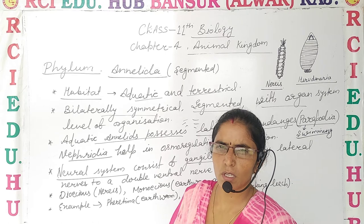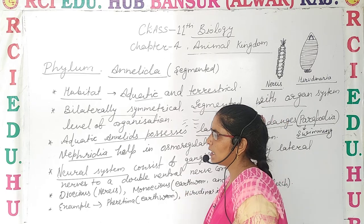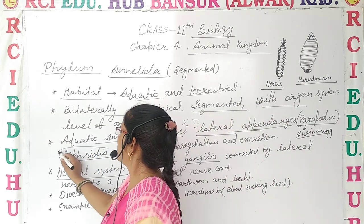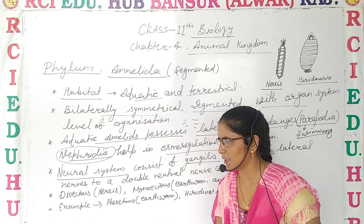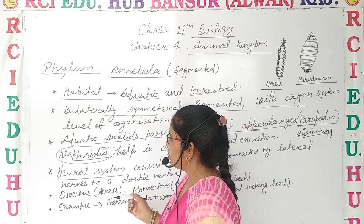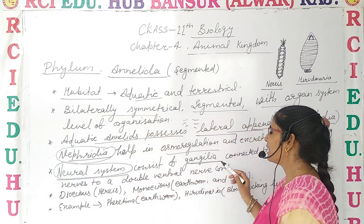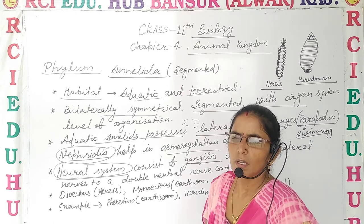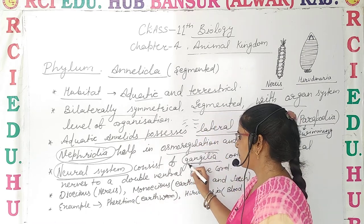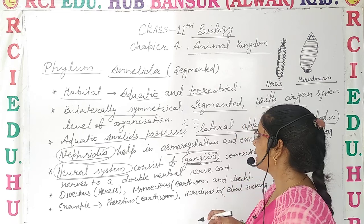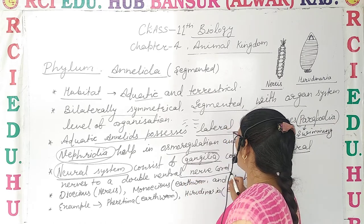Nephridia are the main organs for osmoregulation and excretion. Previously in Platyhelminthes, flame cells served this function. A new neural system is also developed, formed by ganglia.